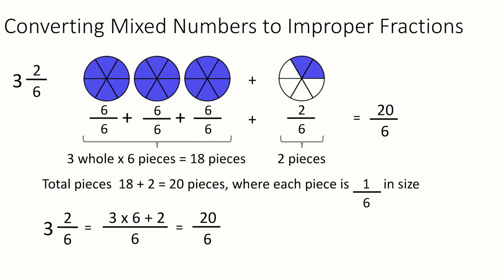And then we add the 2 that was already in the top of a fraction. So 3 times 6 plus 2 gives us the 20. And then we keep the bottom the same as it originally was, in this case 6. So if you do that same process, each time you want to go from a mixed number to an improper fraction, this will always work and you don't have to draw out a picture or a diagram to help you figure out what that is.